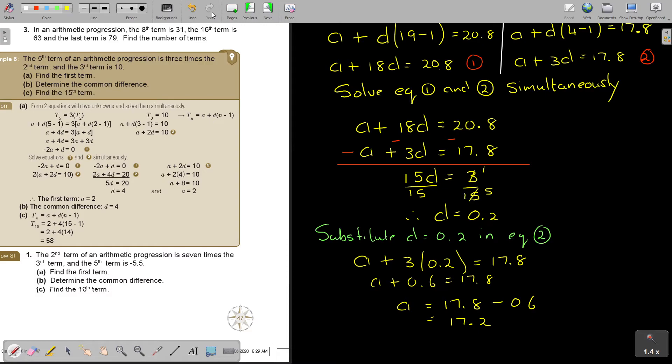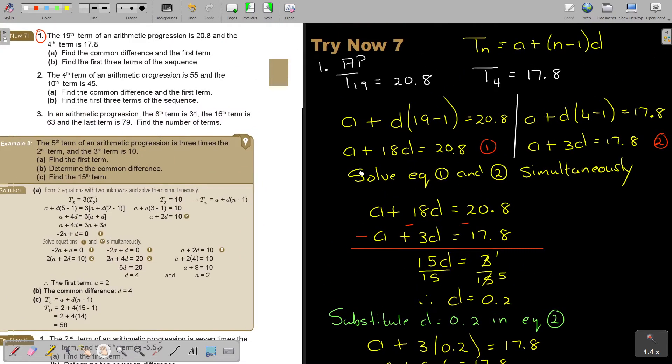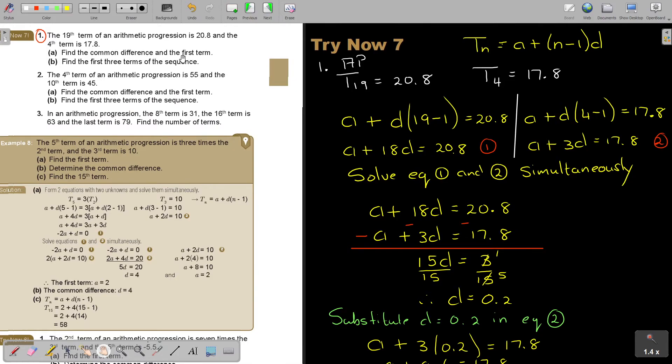Okay, let's just go back to the question to read it. Find the common difference and the first term. So this was definitely A. And then find the first three terms of the sequence. So let's go for B.